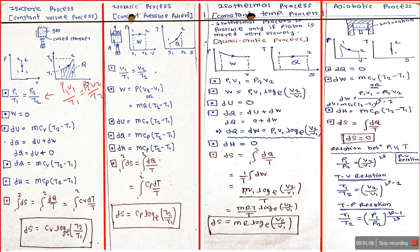For the isobaric process, where pressure is constant, the general gas equation becomes v1 upon t1 is equal to v2 upon t2. For the isothermal process, temperature is constant, so the equation becomes p1 v1 is equal to p2 v2. For the adiabatic process, the general gas equation is p v raised to gamma equals constant — that is, p1 v1 raised to gamma equals p2 v2 raised to gamma equals c.